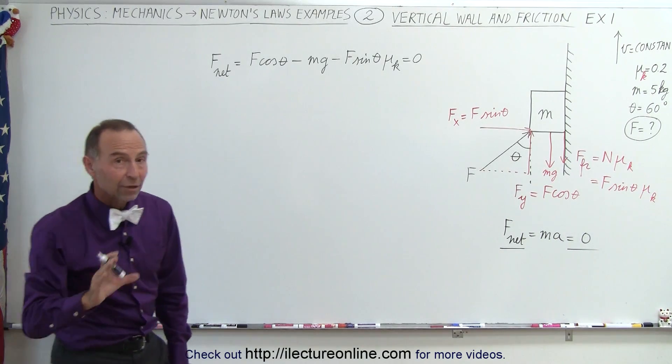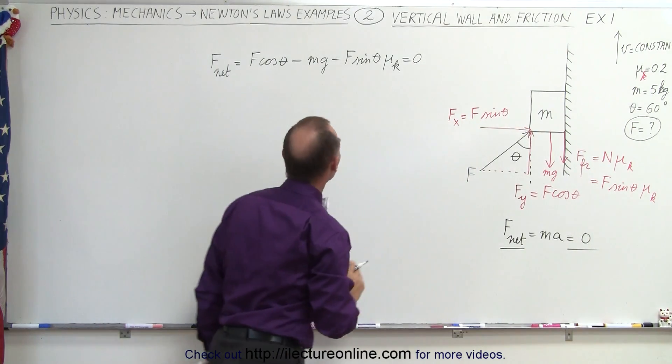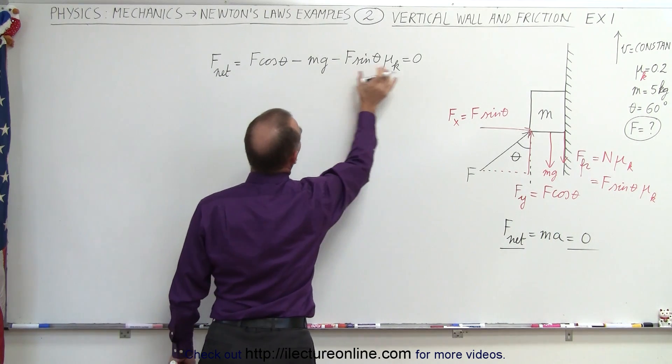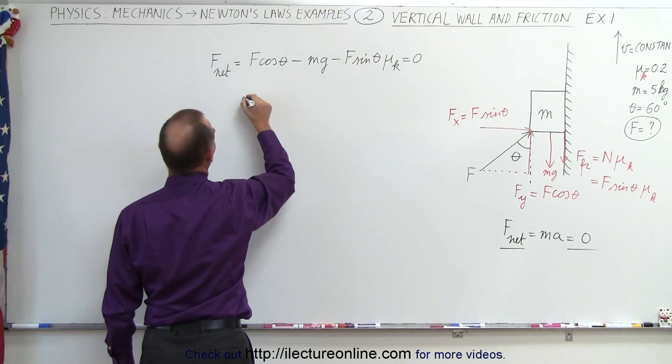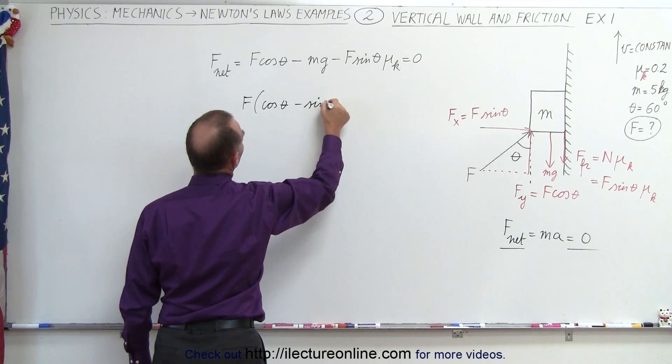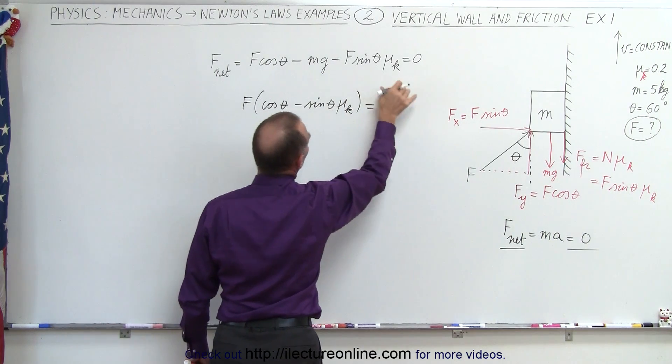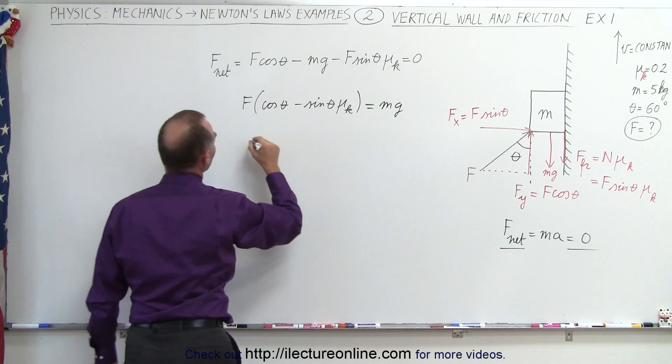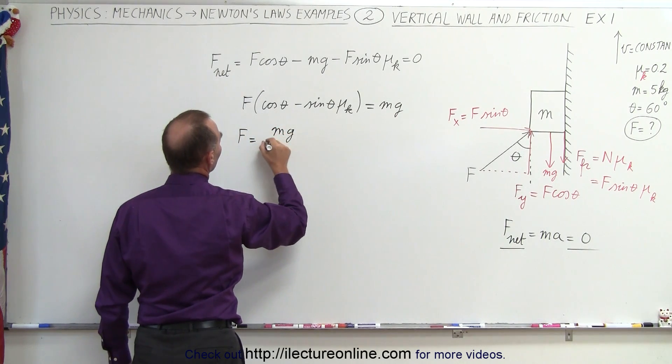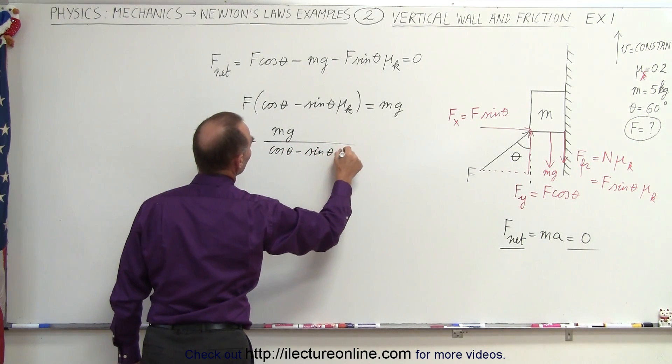And notice what we're doing here: we're trying to find the force required to slide the block upward at a constant velocity. So now what we're going to do is factor out an F. So we move the mg to the other side, so we have F times the cosine of theta minus the sine of theta times mu sub k, and that equals - we move the minus mg over - that becomes a plus mg. And finally, we can say that the force required will be mg divided by the cosine of theta minus the sine of theta times mu sub k.